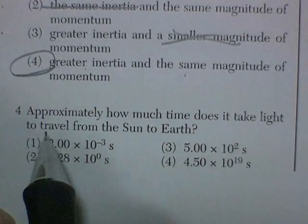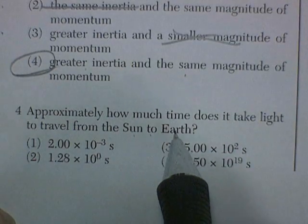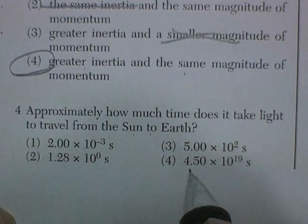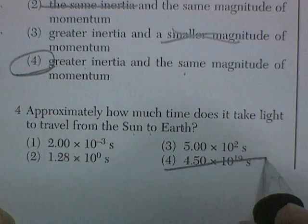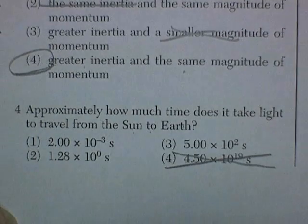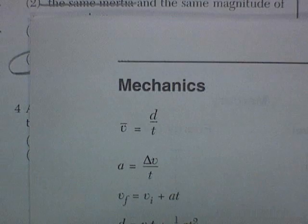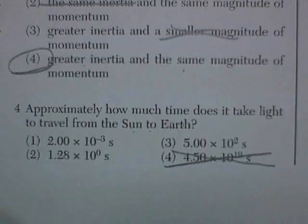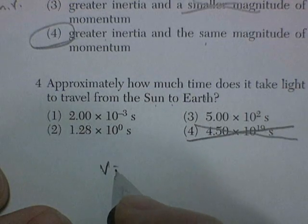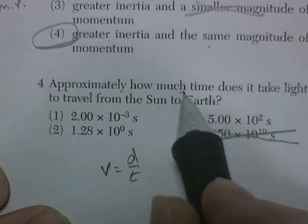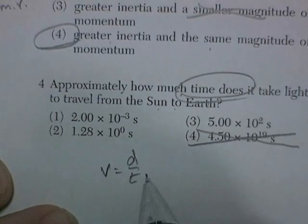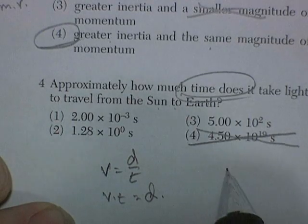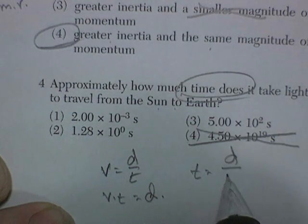Approximately how much time does it take light to travel from the sun to the earth? Well, I'm going to cross out this one. 4 times 10 to the 19 seconds? That's a long time. Well, let's do the math, I guess. The formula is velocity is distance over time. So let's write that down. Velocity equals distance over time. And they want to know for time. So we've got to get time by itself. So velocity times time is equal to distance. And so time must be equal to distance divided by velocity.